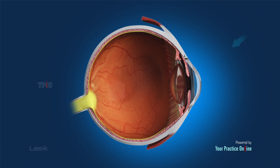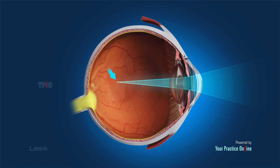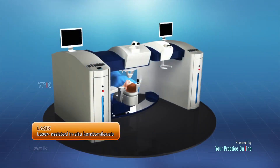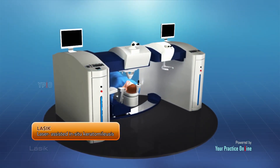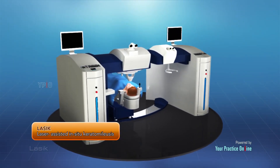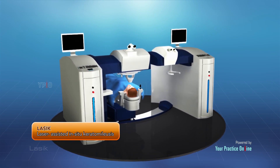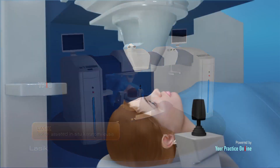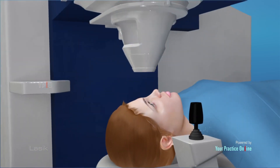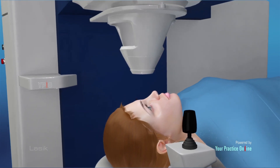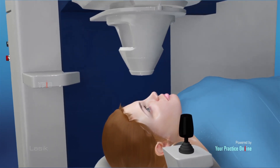Problems with the cornea's focusing ability can lead to refractive errors. Refractive errors are vision problems that happen when the shape of the eye keeps you from focusing properly. Laser-assisted keratomileusis, commonly called LASIK, is a surgical procedure performed to reshape the cornea for the correction of refractive errors.